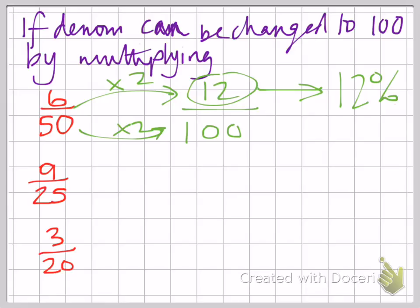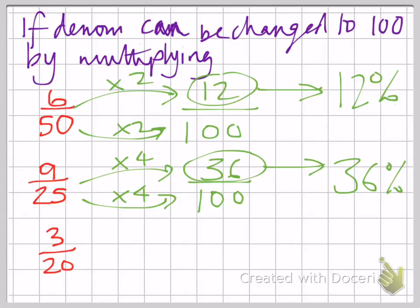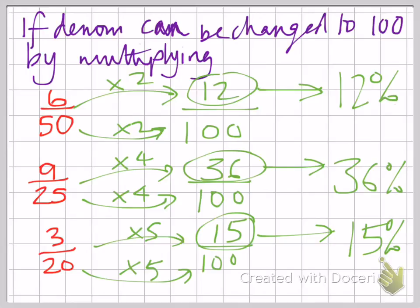On my next one, I've got 9 25ths. I can change 25 into 100 by timesing by 4. Whatever you do to the bottom, you also do to the top. So whatever fraction you're given, see if you can change it into a fraction with 100 on the bottom by multiplying.